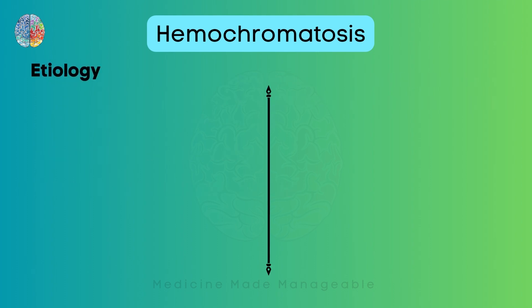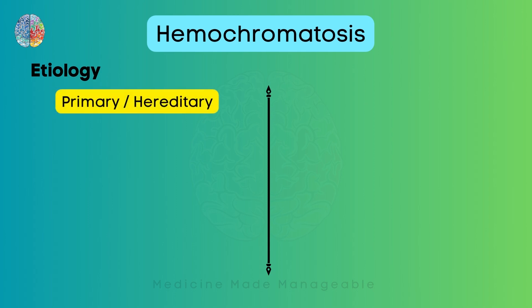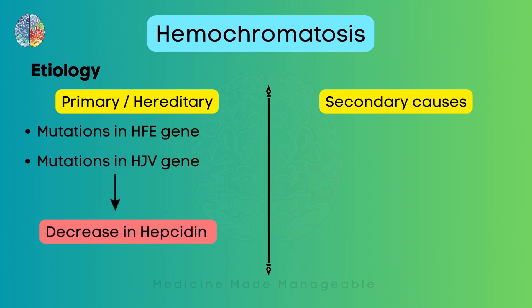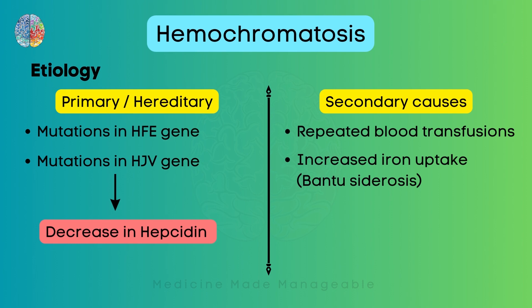Now what are the causes of hemochromatosis? The causes can be divided into two categories: primary causes and secondary causes. Primary means this will occur if there are some mutations in the genes — for example, mutations in the HFE gene or mutations in the HJV gene. Both of these can decrease the levels of hepcidin in the body. On the other hand, secondary causes means there are some other acquired causes, for example repeated blood transfusions or increased iron uptake like Bantu Siderosis.